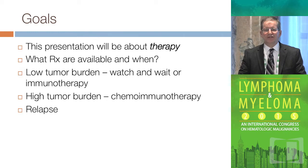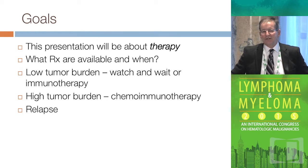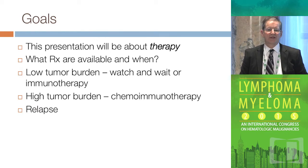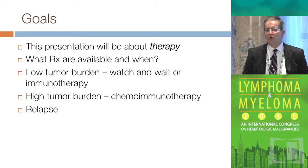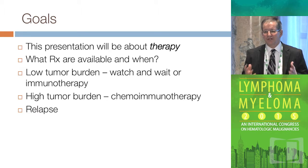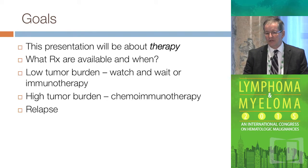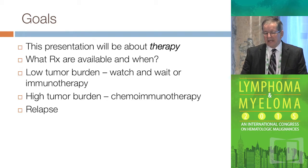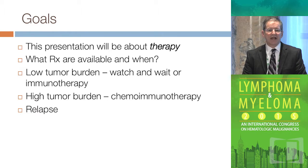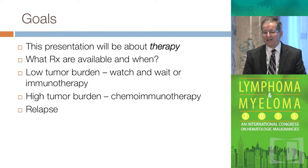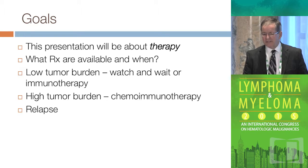What I'd like to talk about is therapy, and when we talk about sequencing things, we have to look at what's available in the toolbox — what you actually have to use. In this disease of follicular lymphoma, we typically divide things into low tumor burden, high tumor burden, and relapse.